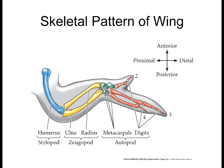As far as the zugopod goes, we have the ulna and the radius in our forearms or forelimbs. In our hindlimbs, we have the tibia and the fibula as part of the zugopod. The autopod is essentially the hands and the feet. The wrist bones we call metacarpals; the bones in your ankle right above your feet we call metatarsals. And then you have the digits — your fingers and your toes. So stylopod is most proximal to your body, zugopod is ulna and radius or tibia and fibula, and the autopod includes the metacarpals, metatarsals, and digits.